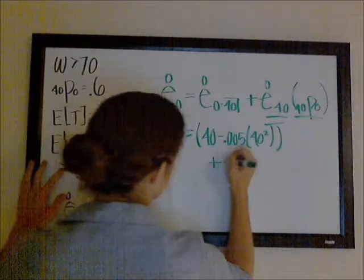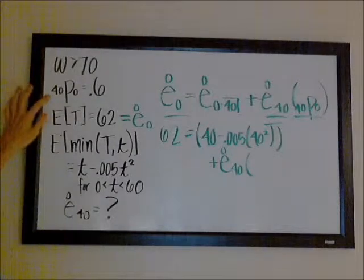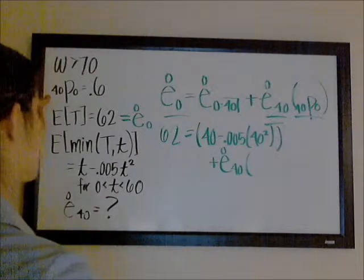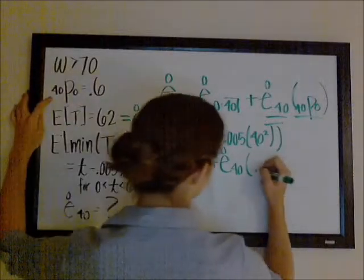Plus, the complete expectation of life at 40 is what we're trying to find, and we're given the probability of surviving, the probability that our zero-year-old survives 40 years, which is 0.6.